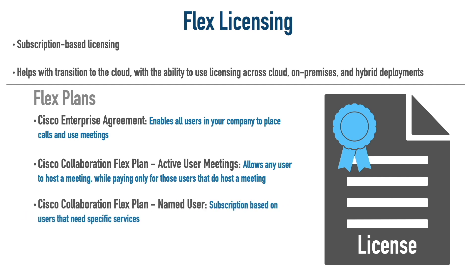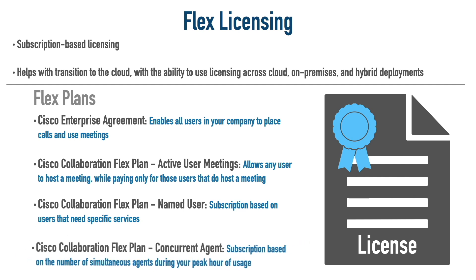That differs from the Cisco Collaboration Flex Plan Named User, where you specify exactly which users can host a meeting and pay for those specific users. Or if you want to pay based on peak usage, consider the Cisco Collaboration Flex Plan Concurrent Agent — you look at the busiest hour of the day with the most simultaneous meetings and pay for the number of meeting agents needed to handle that peak load.